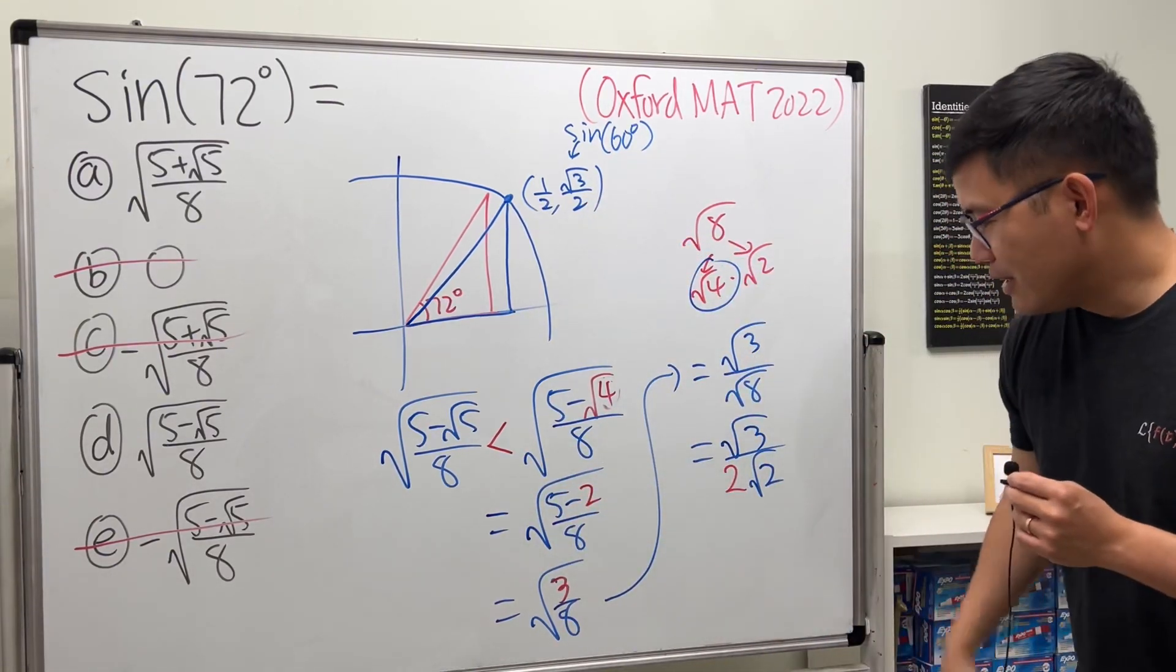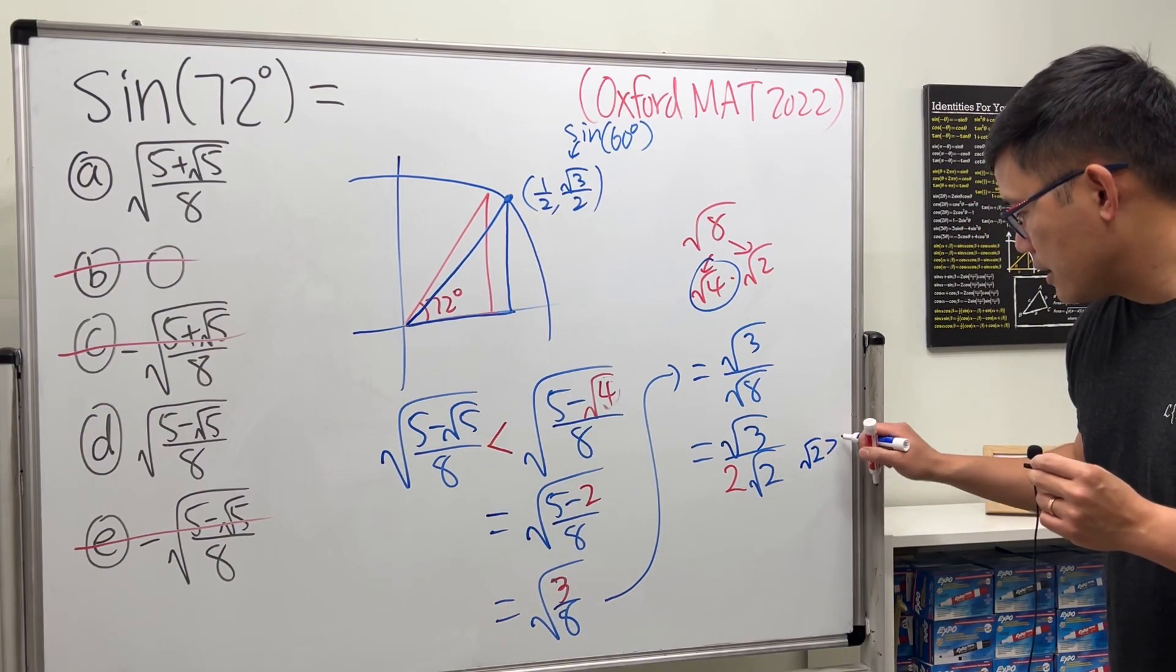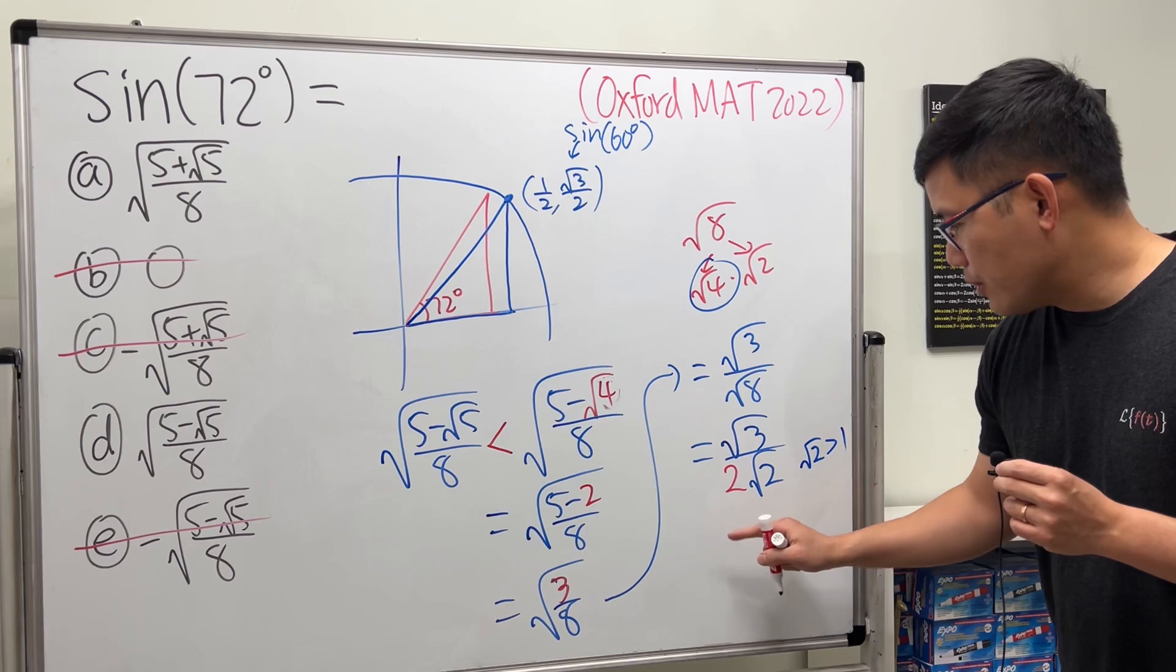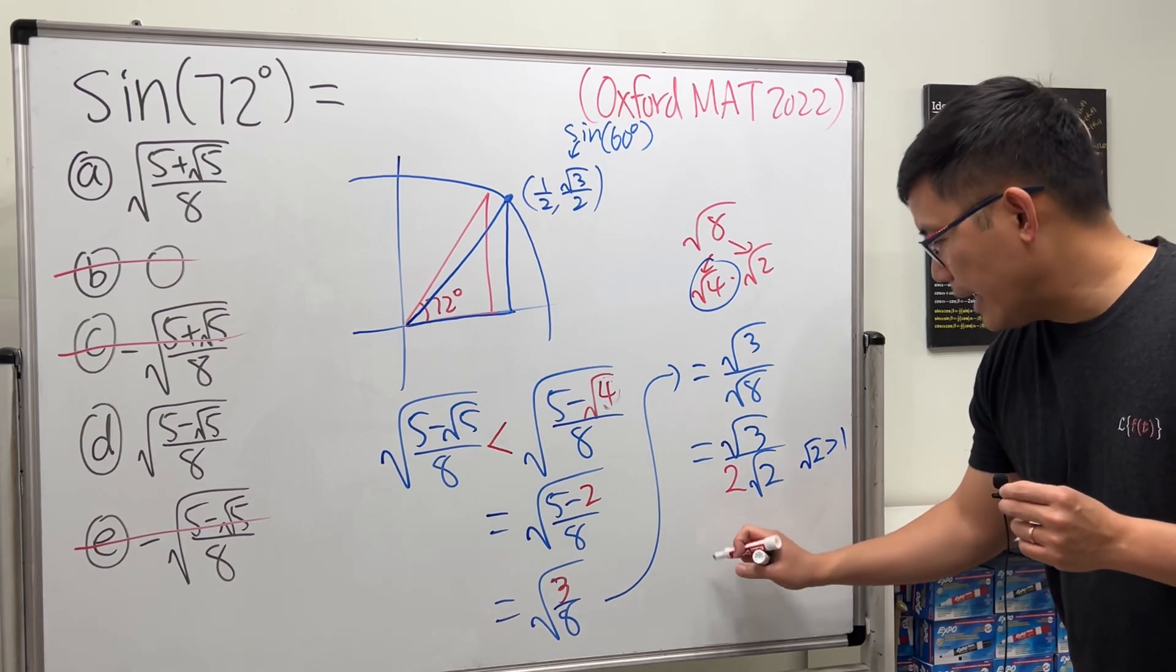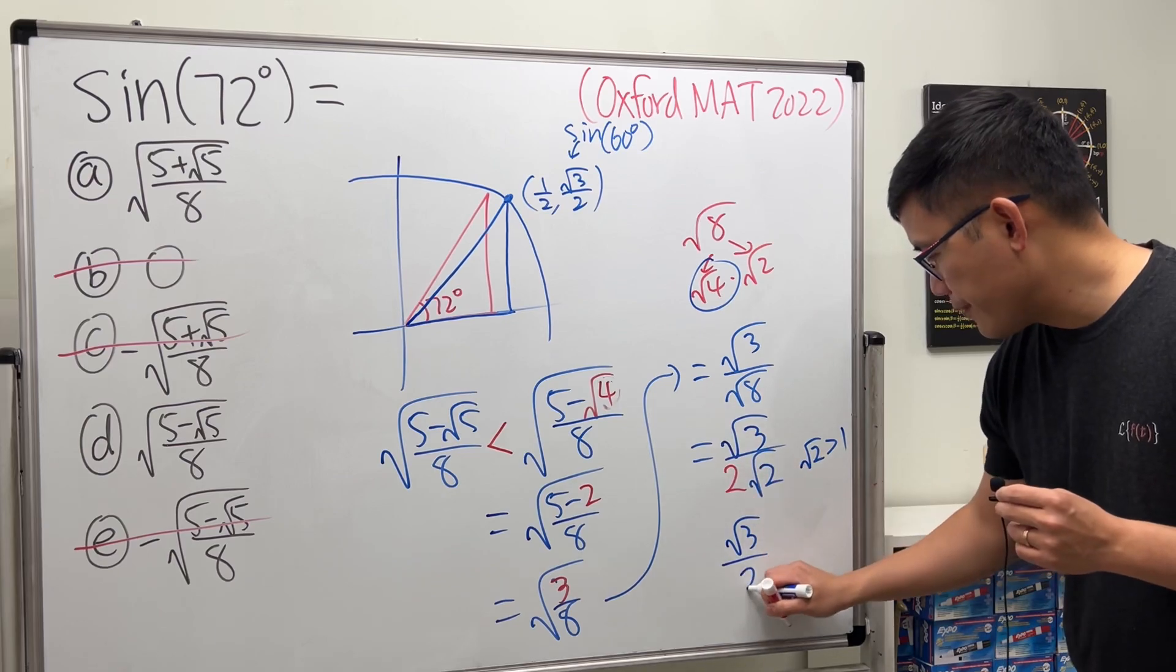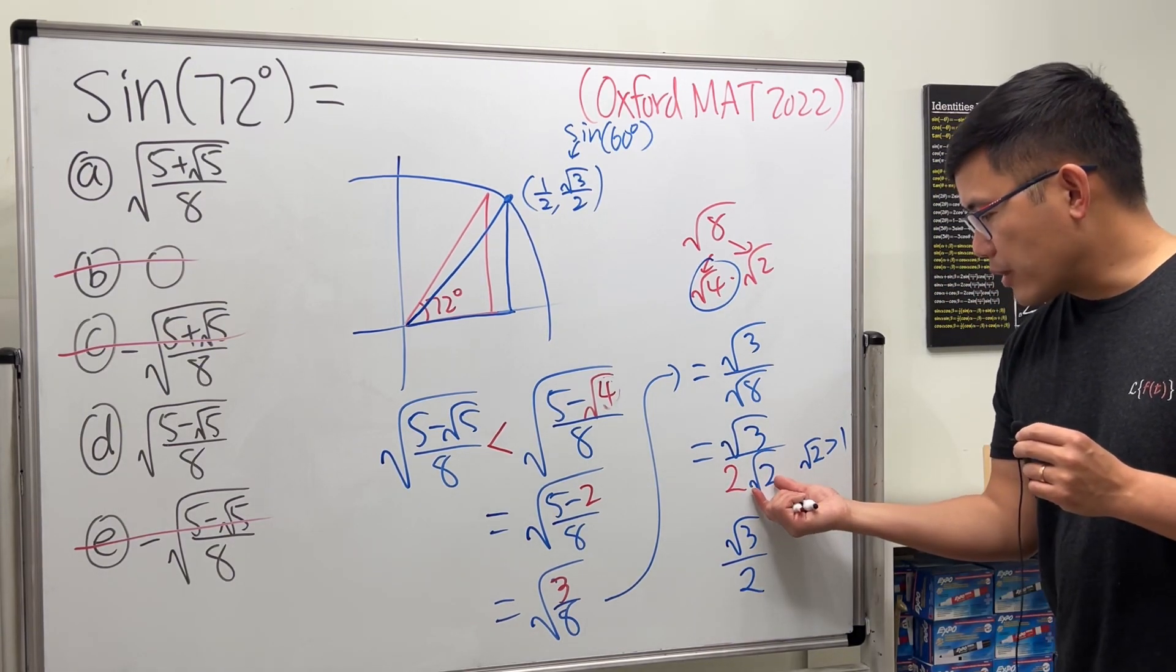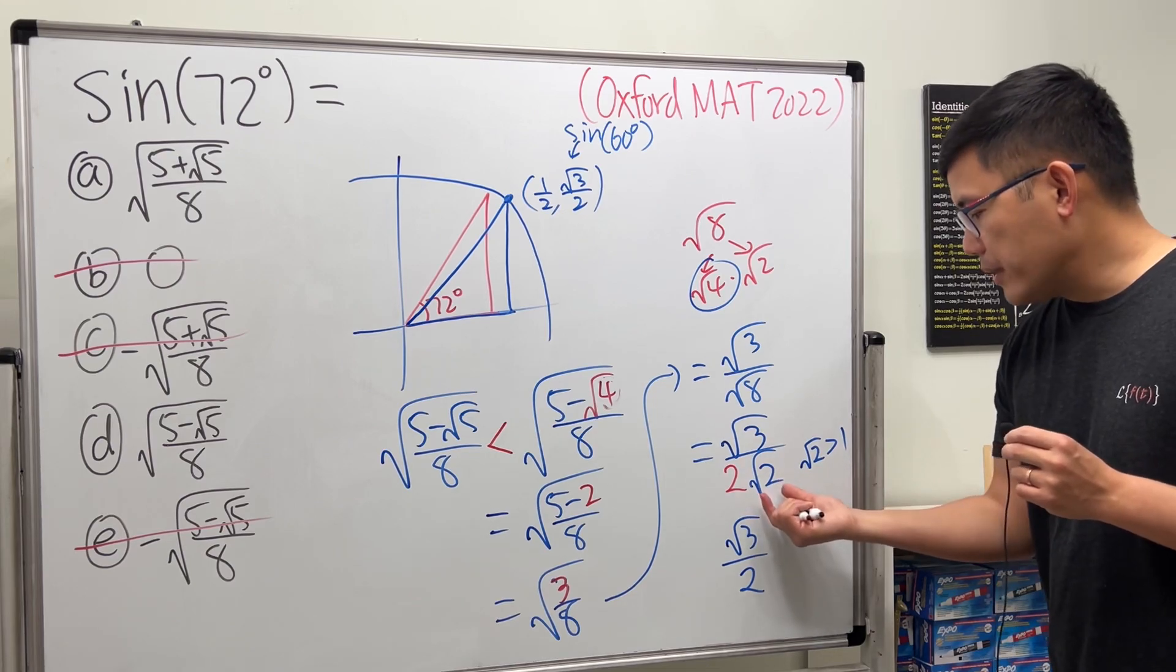Check this out: √2 is bigger than 1. So I'm going to get rid of this and I will just look at √3 over this 2. If we get rid of a bigger number on the bottom, a number bigger than 1, the whole fraction will be smaller.